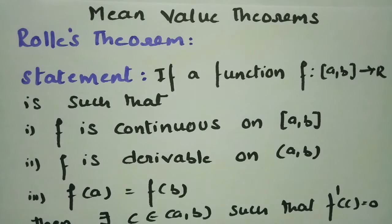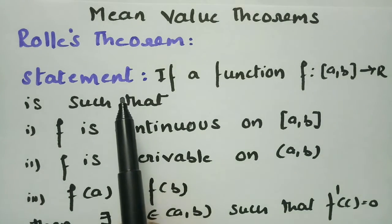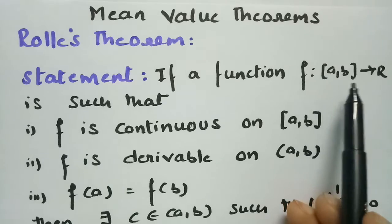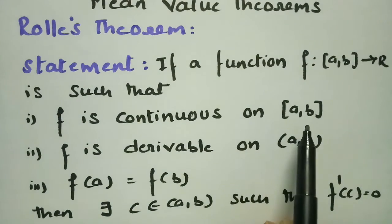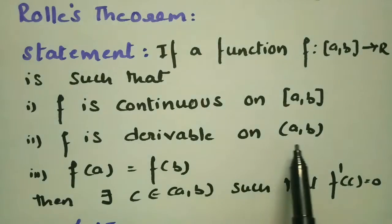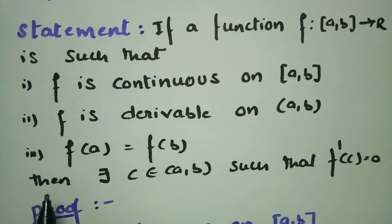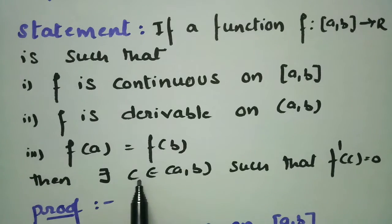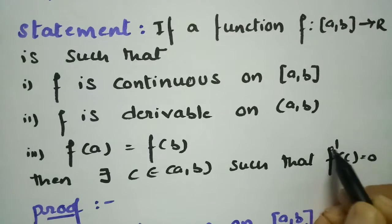Today's topic is Rolle's theorem from mean value theorems. The statement of Rolle's theorem states that if a function f maps from closed [a,b] to R such that f is continuous on closed [a,b], f is derivable on open (a,b), and f(a) is equal to f(b), then there exists c belonging to open (a,b) such that f'(c) is equal to 0.